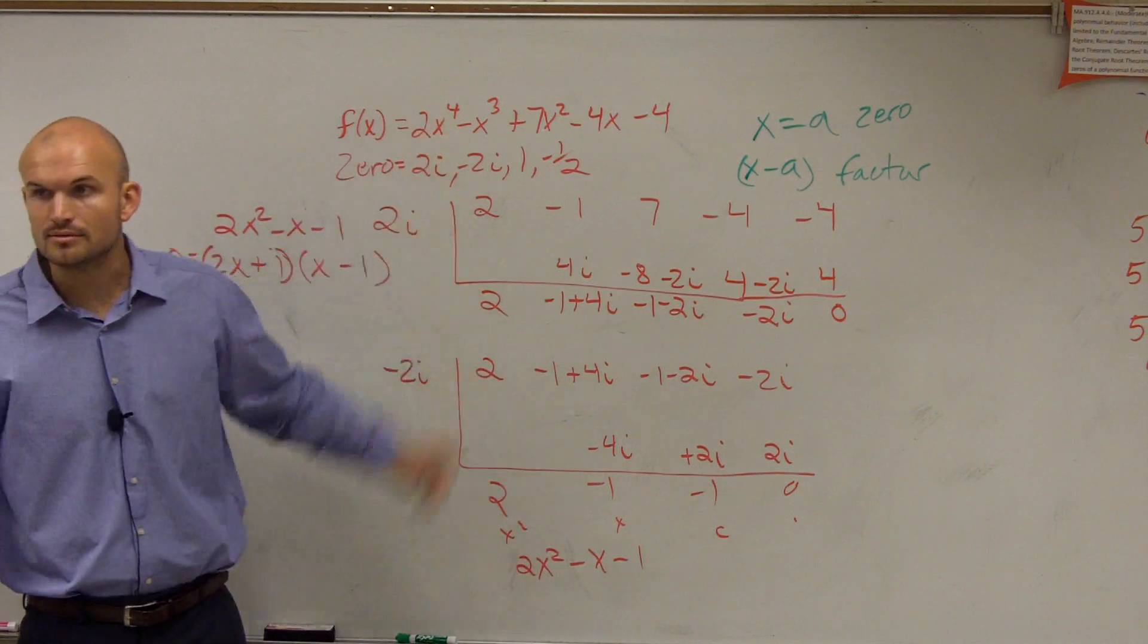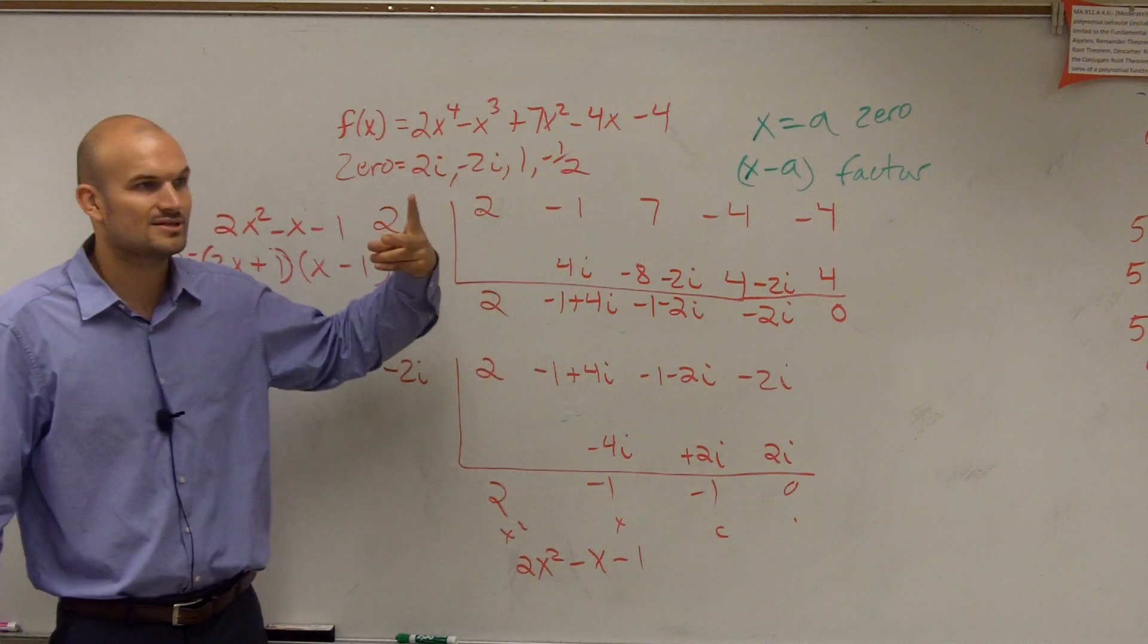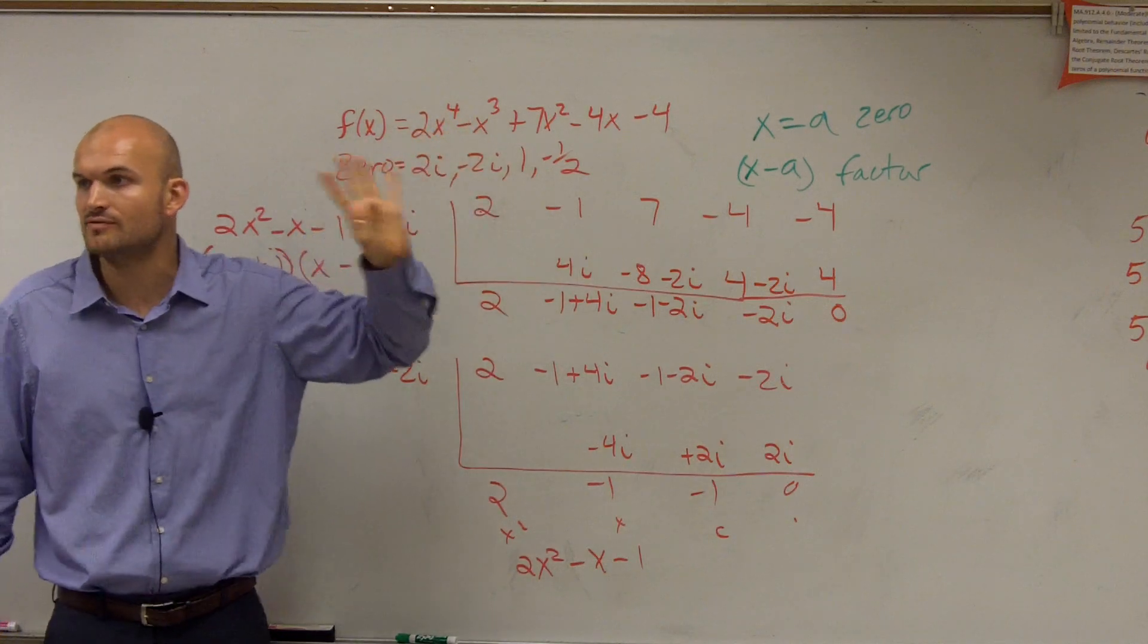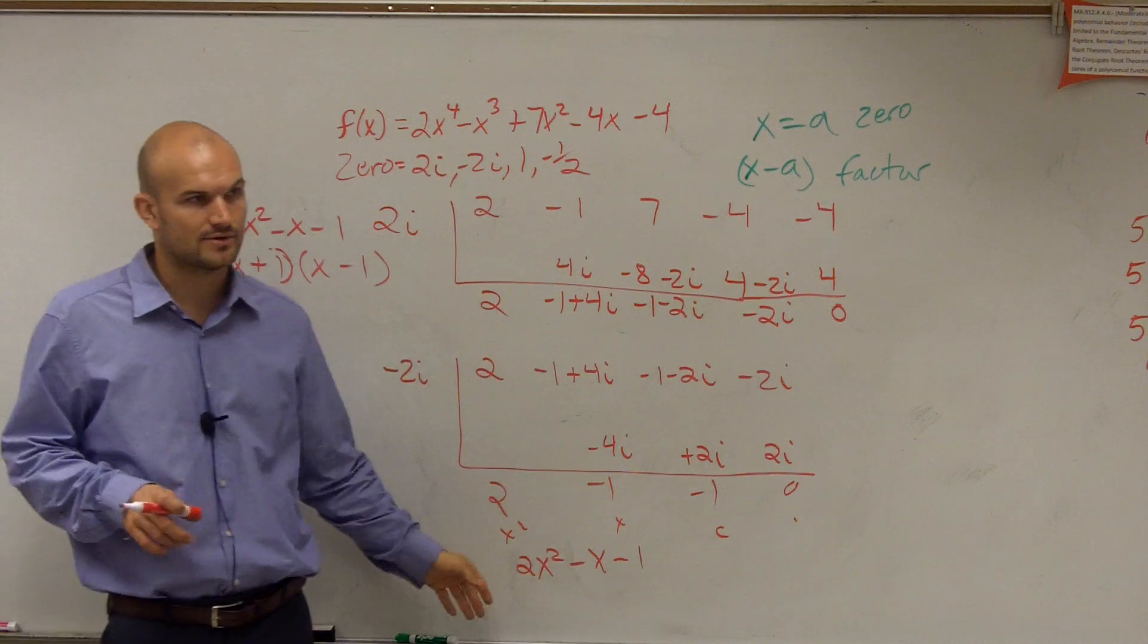So I'm good, right? So if you just did 2i and 2i, and you're like, oh, OK, I'm done, you only prove that two zeros. You have four linear factors, which is going to give you four complex zeros. All right, so you've got to make sure you keep on going on. So just factor that through.